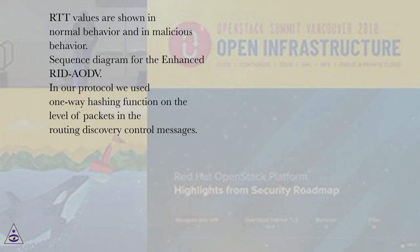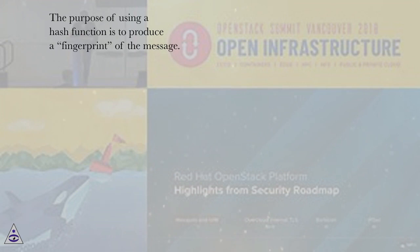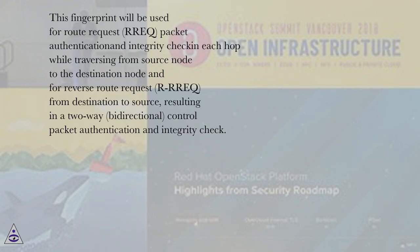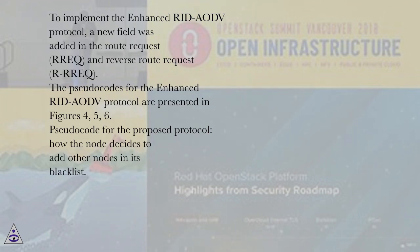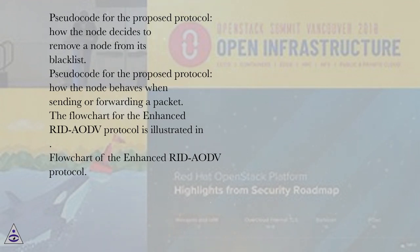In our protocol we used a one-way hashing function at the level of packets in the routing discovery control messages. The purpose of using a hash function is to produce a fingerprint of the message. This fingerprint will be used for route request, RREQ, packet authentication and integrity check in each hop while traversing from source node to destination node, and for reverse route request from destination to source, resulting in a two-way, bi-directional, control packet authentication and integrity check. To implement the Enhanced RID ODE protocol, a new field was added in the RREQ and reverse RREQ. The pseudocodes for the Enhanced RID ODE protocol are presented in figures 4, 5, and 6, covering how the node decides to add or remove other nodes in its blacklist, and how the node behaves when sending or forwarding a packet.